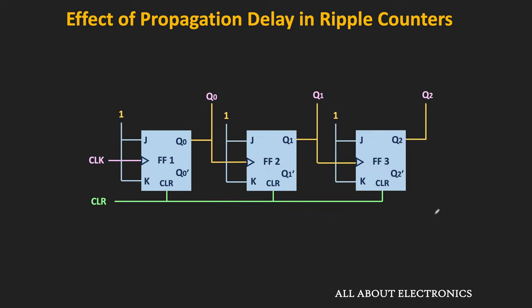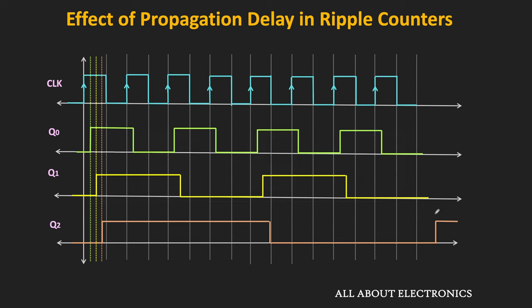This is the timing diagram of the 3-bit down counter, including the effect of the propagation delay. Initially, all the flip-flops have been reset to 0. At the first clock edge, the output of the counter should become 111. But due to the propagation delay of Q0, the output remains 000, then becomes 001 due to Q1's delay, then momentarily 011, and after the propagation delay of all 3 flip-flops, the output of the counter goes to 111. Due to the propagation delay of each flip-flop, momentarily the output goes to unwanted states, which can give us a false count during decoding.